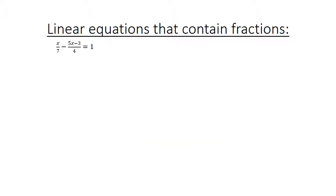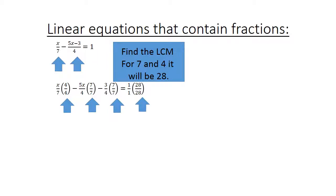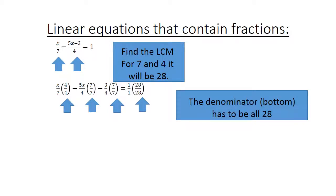Now look at the following example: x over 7 minus (5x minus 3) over 4 equals 1. Find the lowest common multiple for 7 and 4 — it will be 28. Multiply x over 7 by 4 over 4, and (5x over 4) by 7 over 7, and also (3 over 4) by 7 over 7. Equals 1 over 1, multiplied by 28 over 28. The denominator has to be 28.